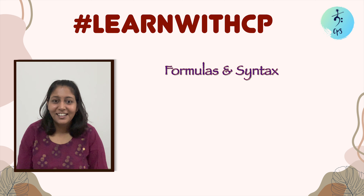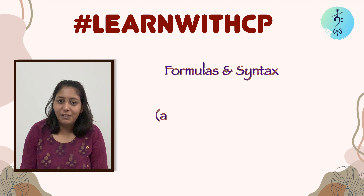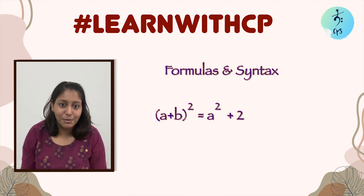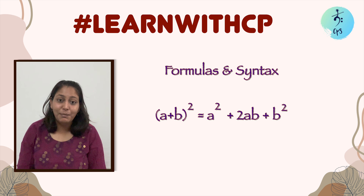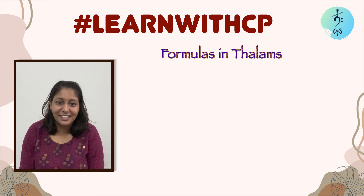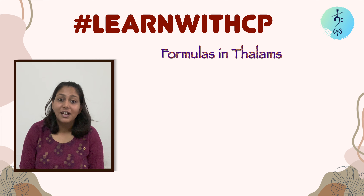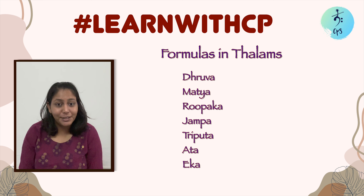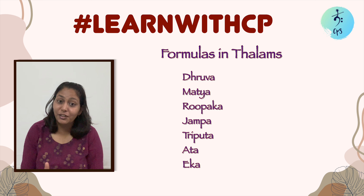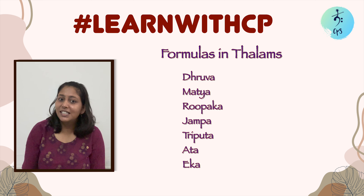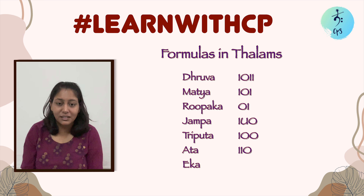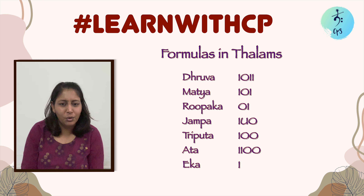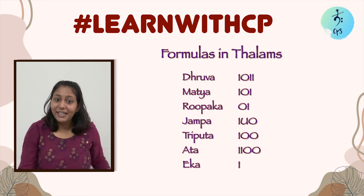We all know formulas in maths, and every formula has a syntax — for example, (a+b)² = a² + 2ab + b². Similarly, in Carnatic music we also have syntaxes. There are seven different formulas of talams: Druva talam, Matya talam, Rupaka talam, Jumpa talam, Triputa talam, Ata talam, and Eka talam. The symbols for these are a combination of lagus, dritams, and anu dritams.